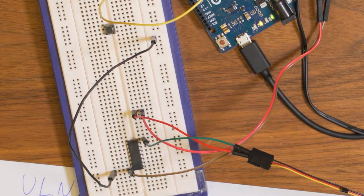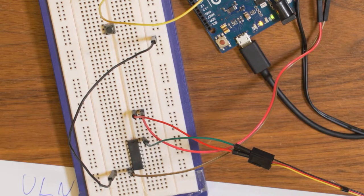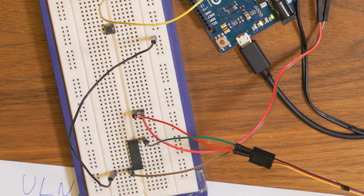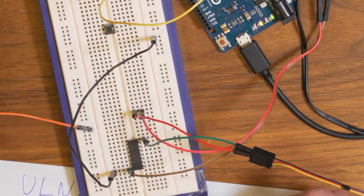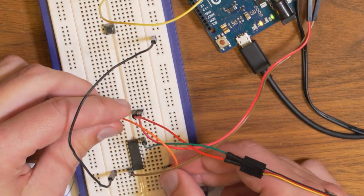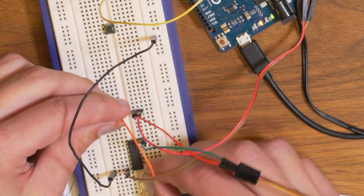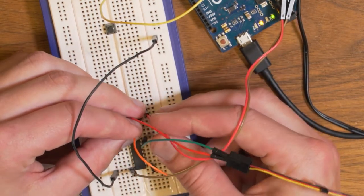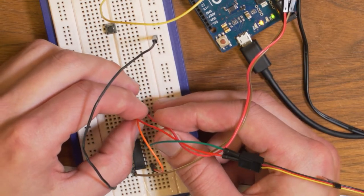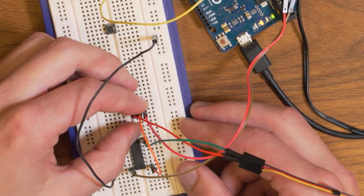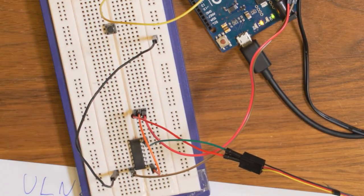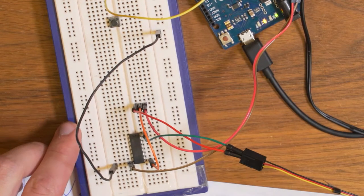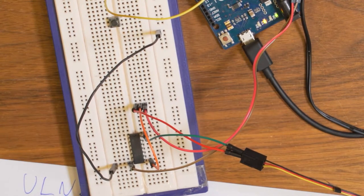I also said that we should connect the 12 volts to the COM port or the COM pin of the chip, which is this one down in the right corner. So, I will connect that one to the positive side of the power supply as well. Alright, so now it should be hooked up and ready to be controlled by a digital pin on the Arduino.